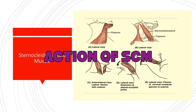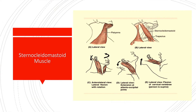Now talking about the actions of the sternocleidomastoid. First, unilateral contraction: when this muscle contracts unilaterally it can perform two actions. One is to tilt the neck and bring the head closer to the shoulder of the same side — simply called tilting of the head — assisted by the upper fibers of trapezius. The other action is to twist the neck such that the chin or face turns to the opposite direction.